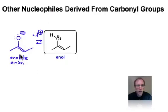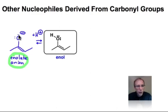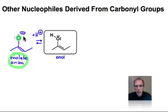In the last webcast, I introduced you to the enolate anion, which is derived from a carbonyl by deprotonating the hydrogen at the alpha position. No doubt this is a nucleophilic species. Its nucleophilic character is revealed on oxygen as the anion.